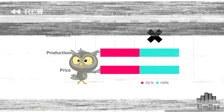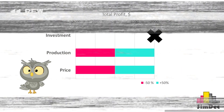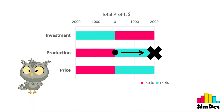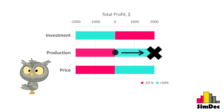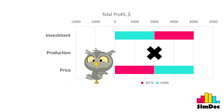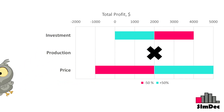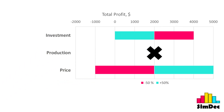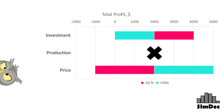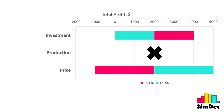And what happens if we push the production up instead? Wrong! The outcome now is much more sensitive to the price. Of course, the price gets multiplied by the higher production, resulting in a wider range of the outcome.